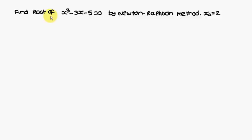First, we solve a problem: x³ - 3x - 5 = 0 by Newton-Raphson method. The initial approximation given is x₀ = 2.